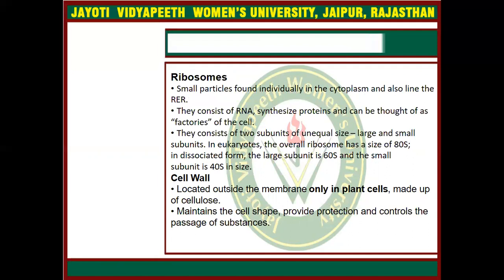The next organelle is ribosomes. Ribosomes are the major organelles which have an important role in protein synthesis. They synthesize proteins in the cytoplasm and are present in the cytoplasm. Ribosomes are of 70S type found in prokaryotes, and 80S type found in eukaryotes. In eukaryotes, the two subunits include the 60S subunit and the 40S subunit, according to their sedimentation size.